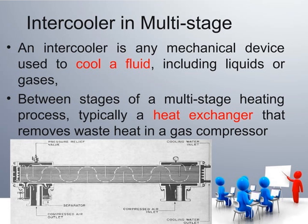In a multi-stage compressor there is an intercooler. An intercooler is a mechanical device used to cool a fluid, and includes both liquids and gases. Between stages of a multi-stage compression process, heat exchangers remove waste heat from the compressed gas. In the diagram, you can see the cooling water inlet and outlet, the compressor air inlet and outlet, a separator, and a pressure relief valve. The intercooler can be shell type or tube type.